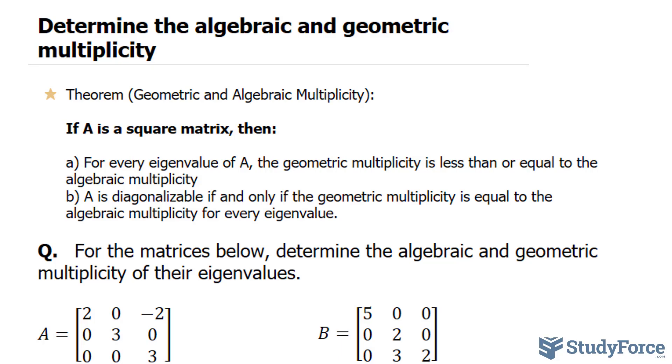So you can't have more eigenvectors than the number of times the eigenvalue occurs. For part B, A is diagonalizable if and only if the geometric multiplicity is equal to the algebraic multiplicity for every eigenvalue. So each eigenvalue produces enough eigenvectors.